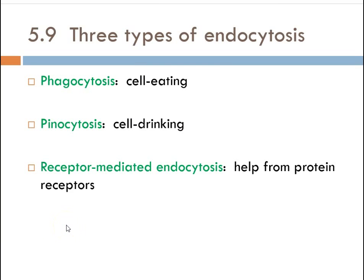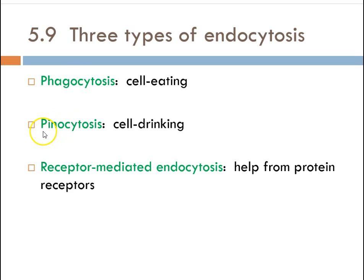The things we can do to bring stuff into the cell involve three different types: phagocytosis, pinocytosis, and receptor-mediated endocytosis. Phago means cell eating. Pineo reminds me of pinot grigio, the wine, so that's what reminds me of cell drinking — and pineo actually means drinking. The last one is receptor-mediated endocytosis.